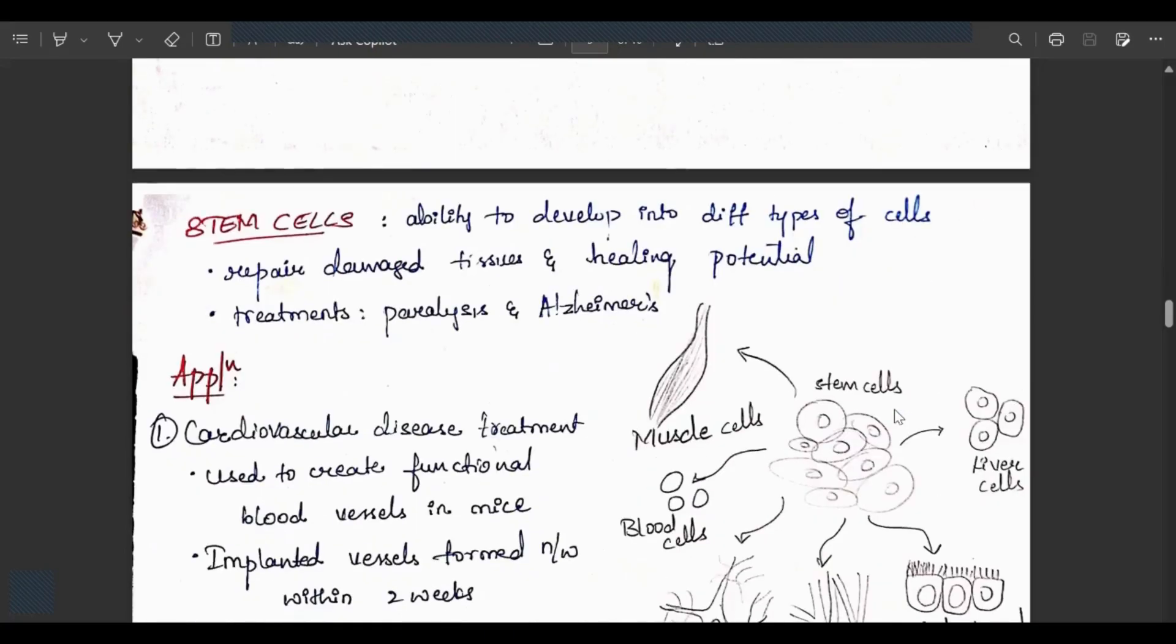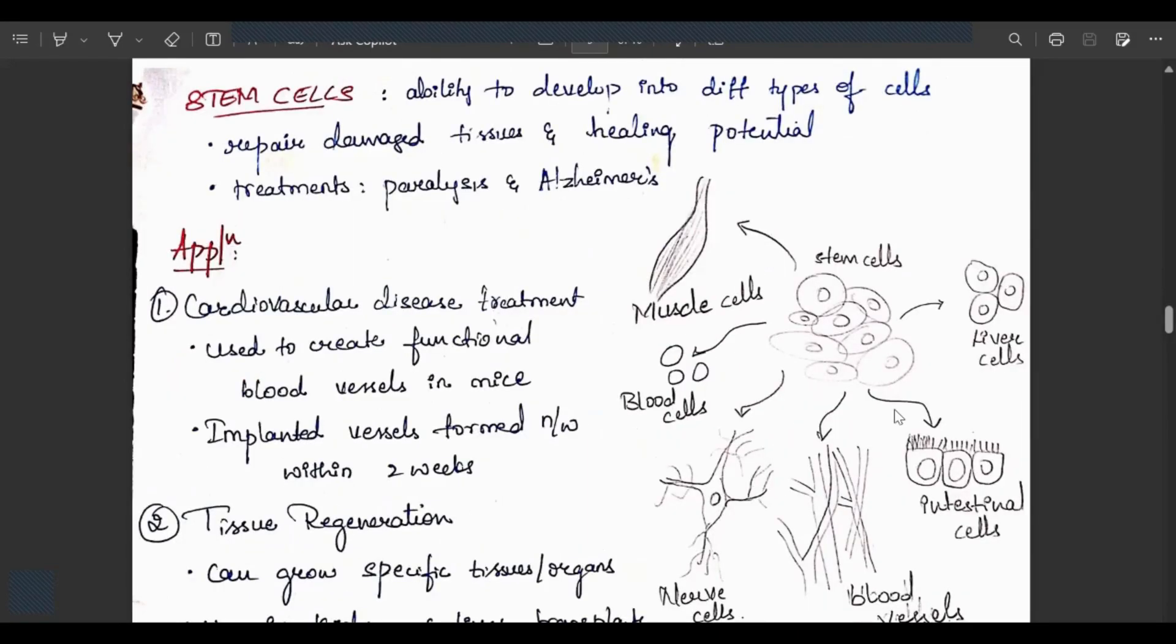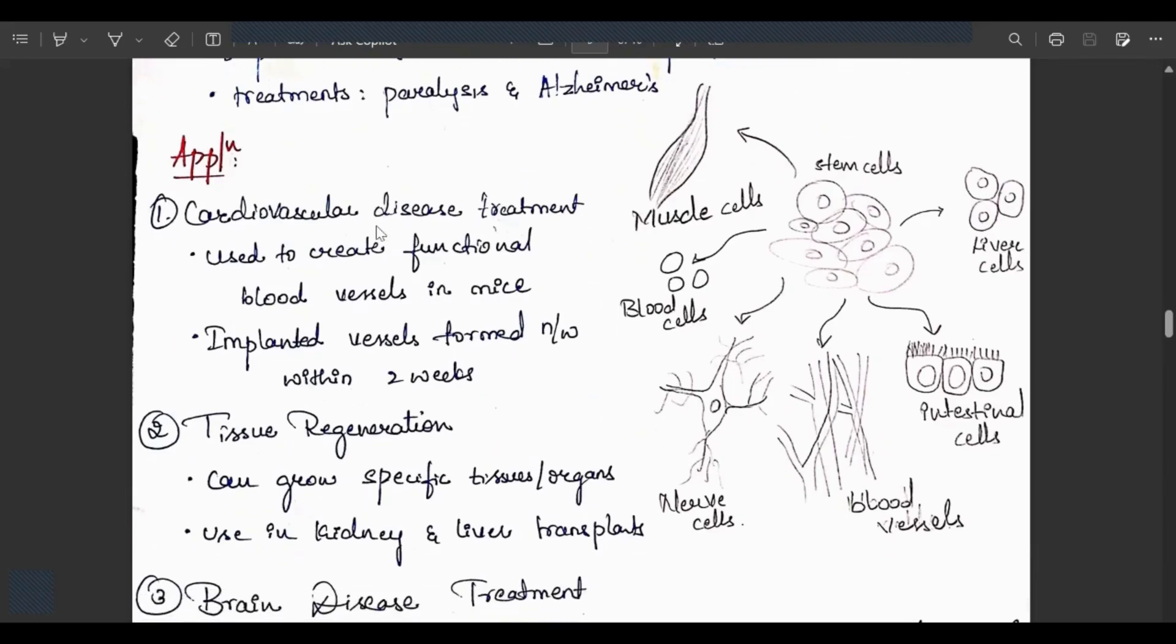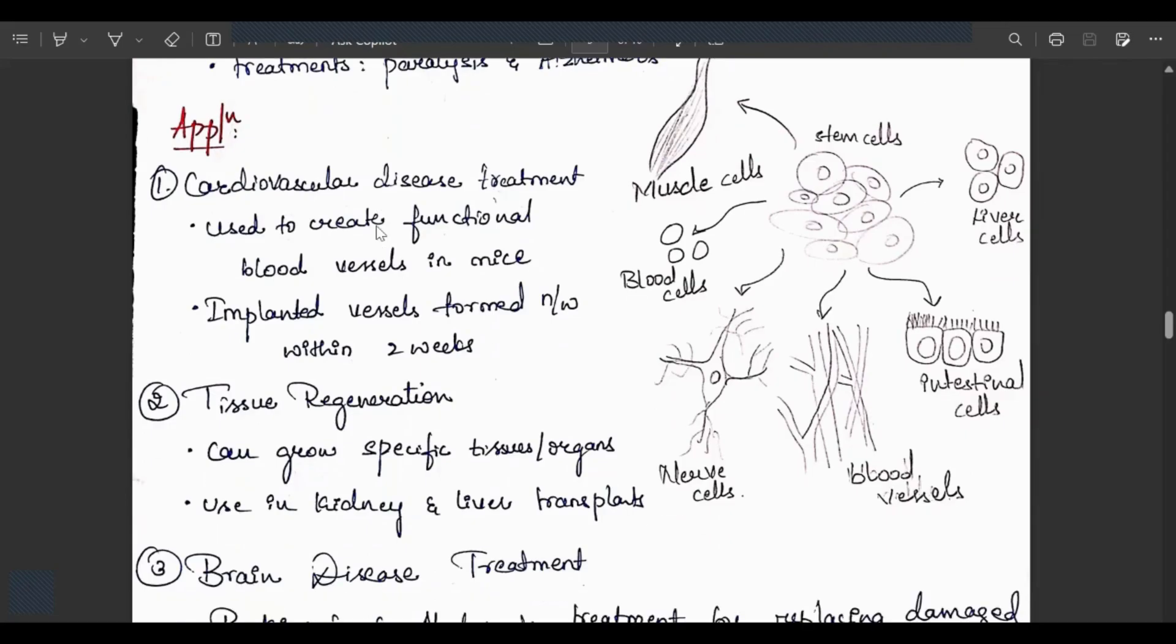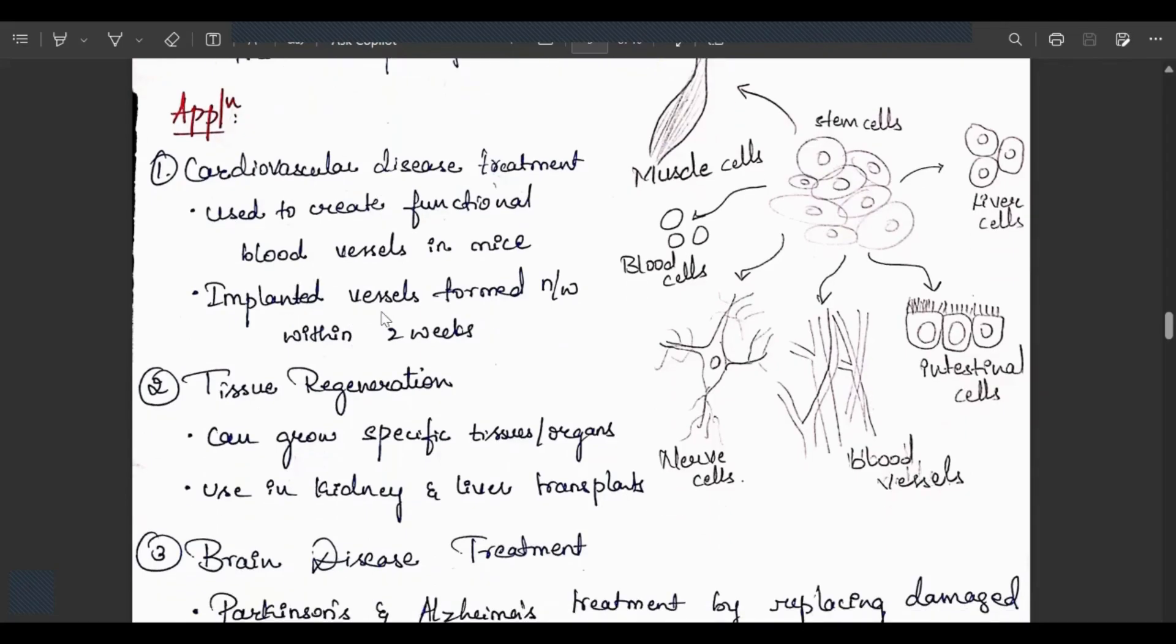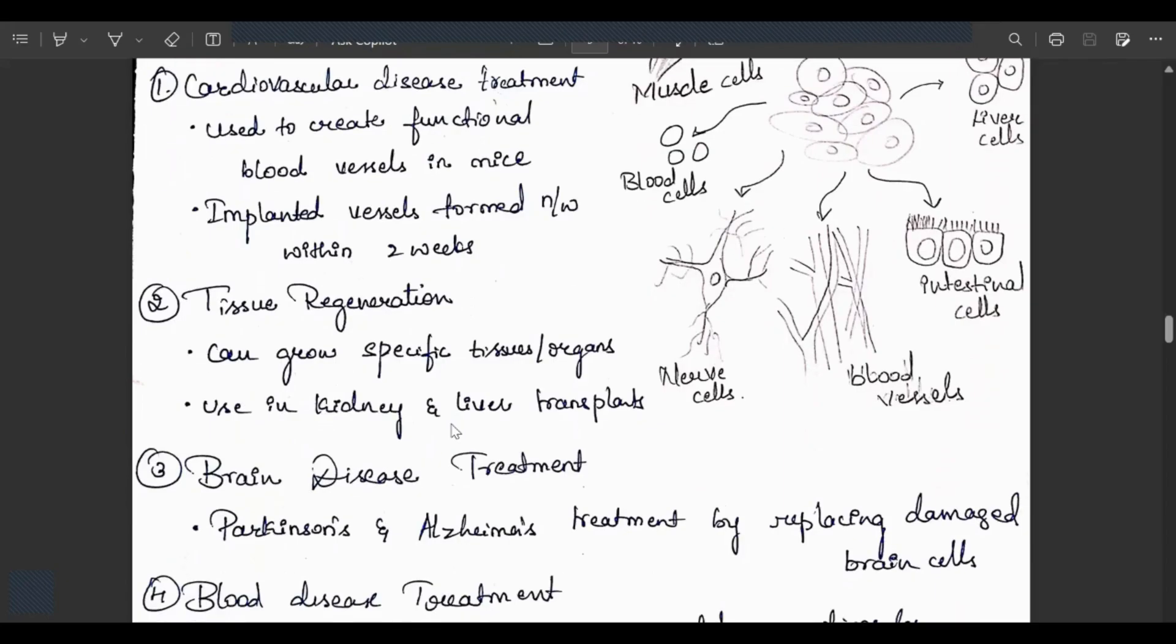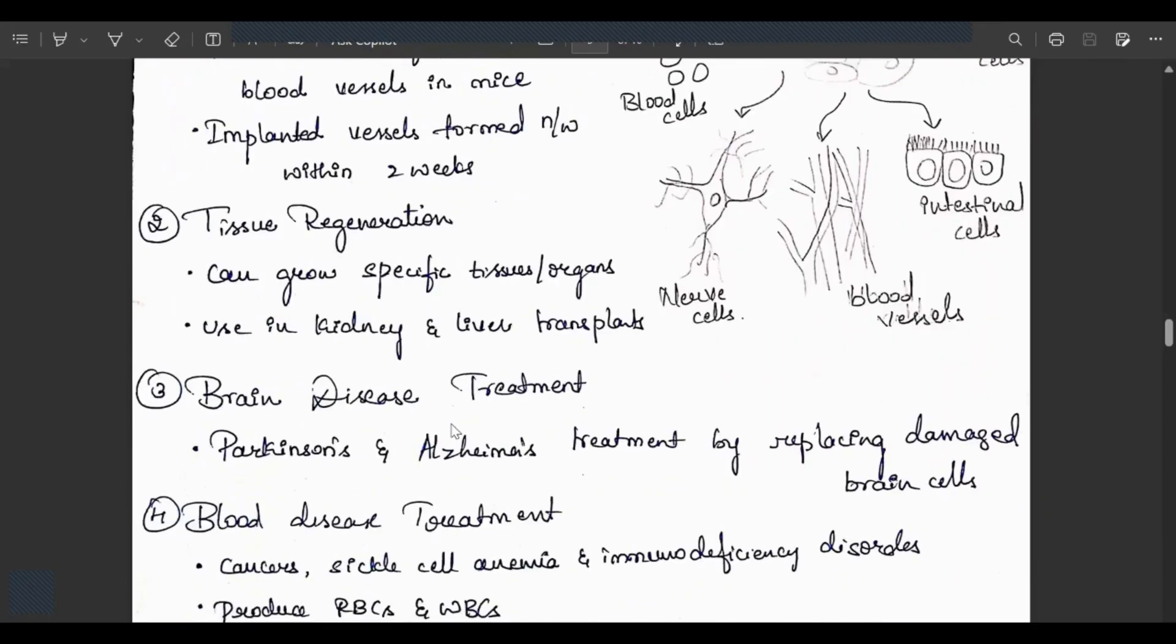Stem cells: ability to develop into different types of cells. They help in repair of damaged tissues and healing. They have healing potential. Treatments using stem cells include paralysis and Alzheimer's. A stem cell can be converted into liver cells, intestinal cells, blood cells, blood vessels, nose cells and even muscle cells. Applications: cardiovascular disease treatment used to create functional blood vessels in mice where implanted vessels formed network within two weeks. Tissue generation helps in specific growth of tissues or organs, used in kidney or liver transplants. Brain disease treatment for Parkinson's and Alzheimer's by replacing damaged brain cells.